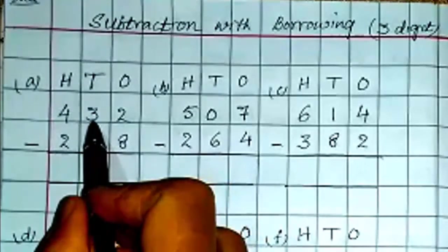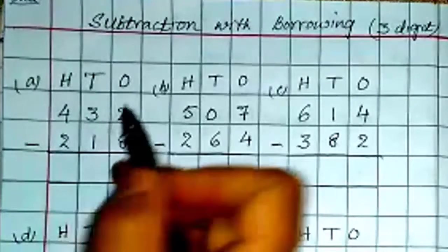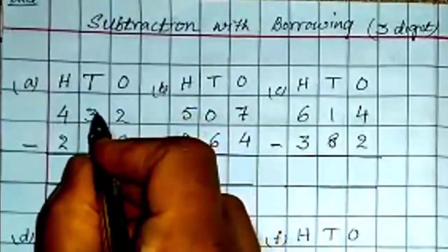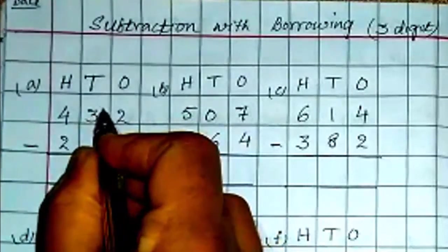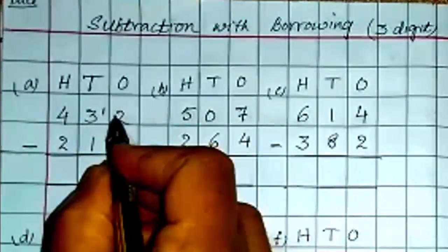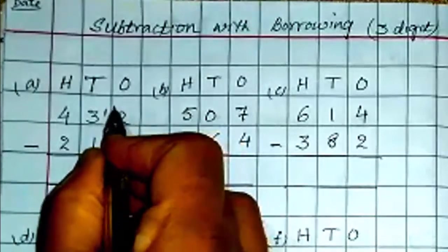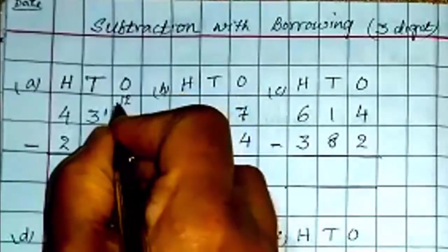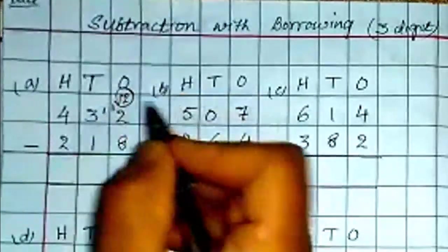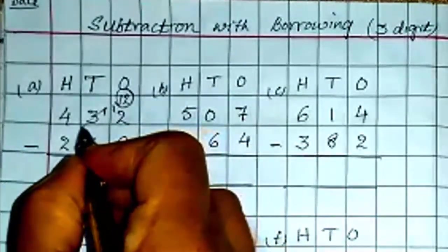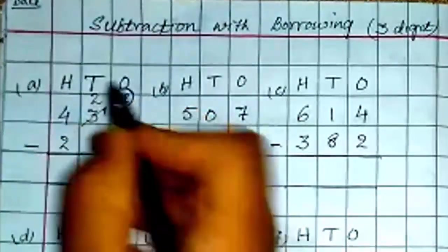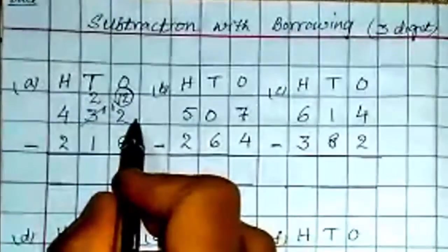Here 8 cannot go from 2. So we are borrowing from tens place, that is 1 ten we are taking. 1 ten means it is 10 ones. So 10 plus 2 is 12 is your number here. Now here it will become 1 less. That is 1 less than 3 is 2. Change the numbers first.